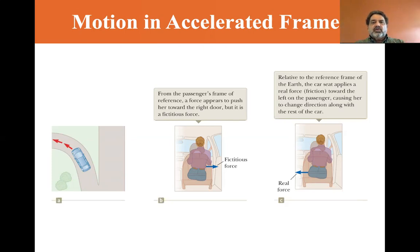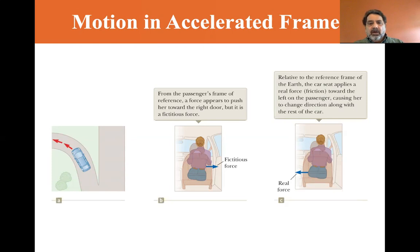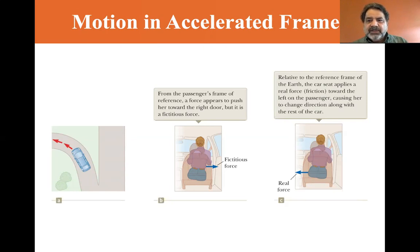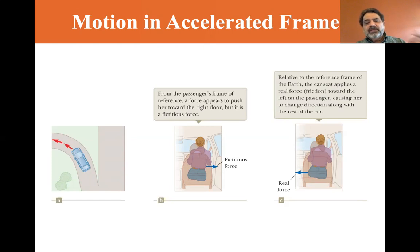Her own inertia wants to keep going straight by Newton's first law, but the door and the friction of the seat make her turn to the left along with the car. Relative to the reference frame of the earth, the car seat applies a real force — friction toward the left — on the passenger, causing her to change direction along with the rest of the car, not only the seat but also the car door. So the fictitious force is outward, the real force is inward, supplying the centripetal force and thus the centripetal acceleration.